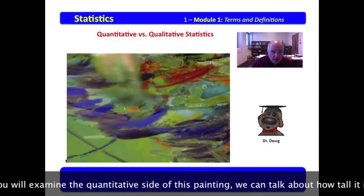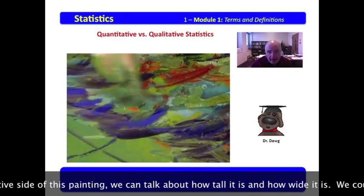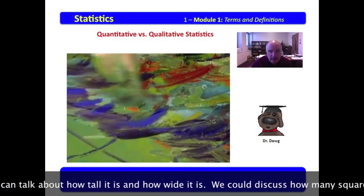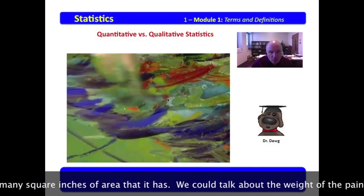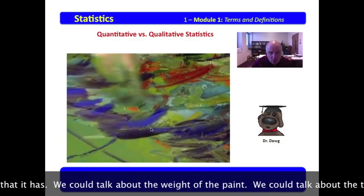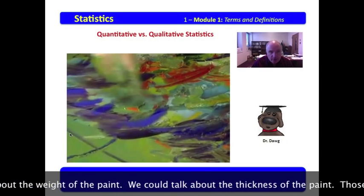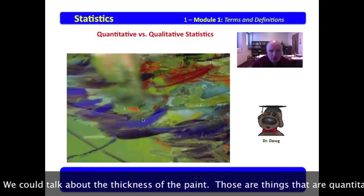If you will examine the quantitative side of this painting, we could talk about how tall it is, how wide it is. We could discuss how many square inches of area that it has. We could talk about the weight of the paint. We could talk about the thickness of the paint. Those are things that are quantitative.